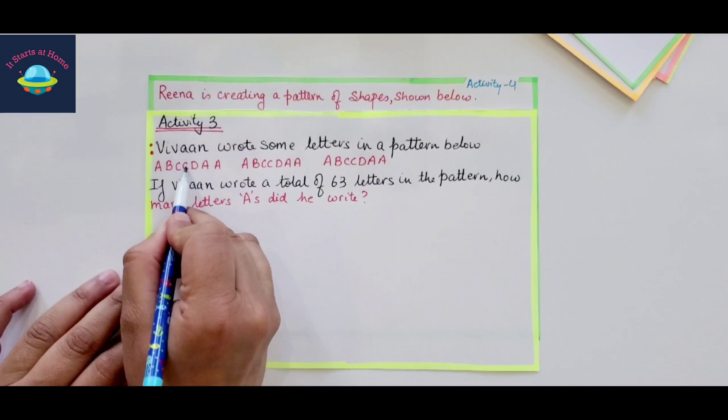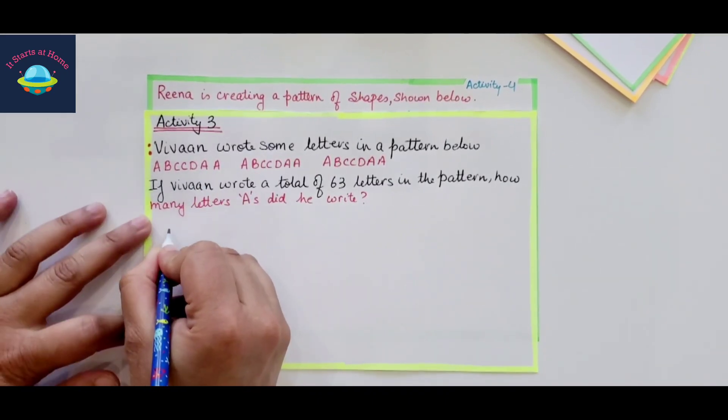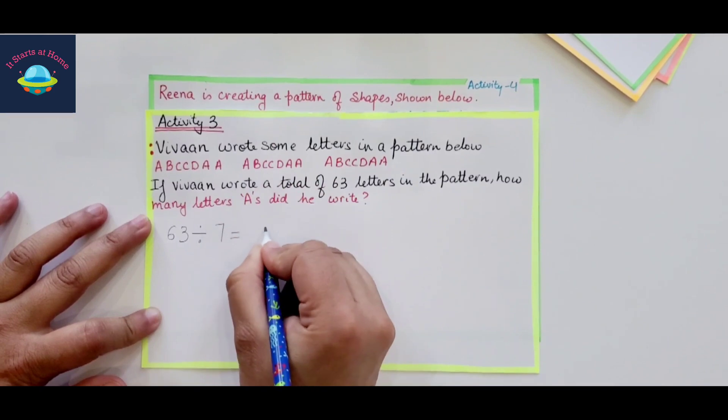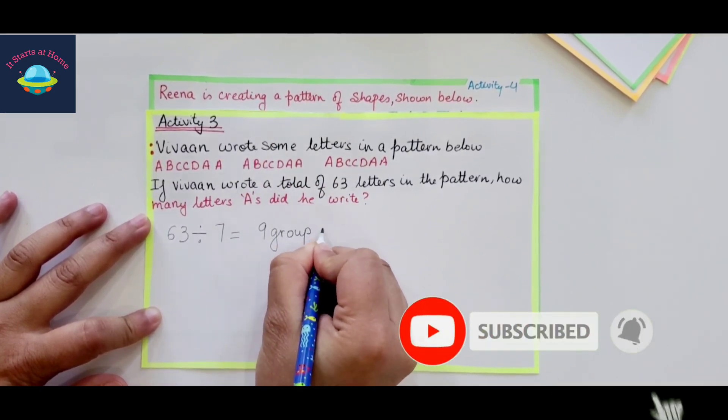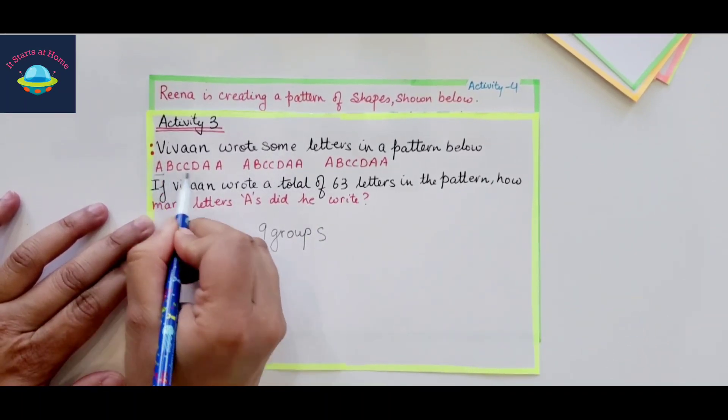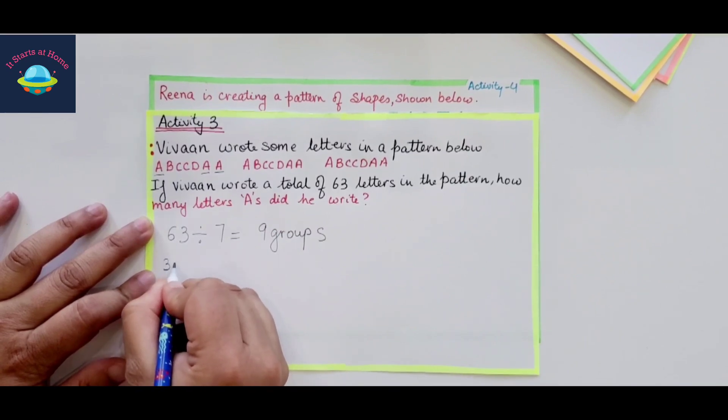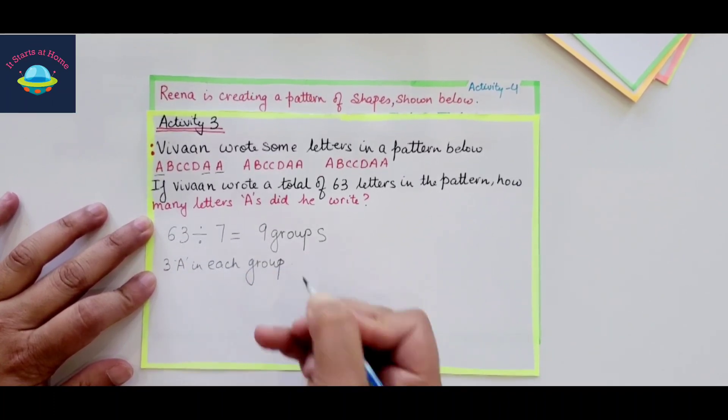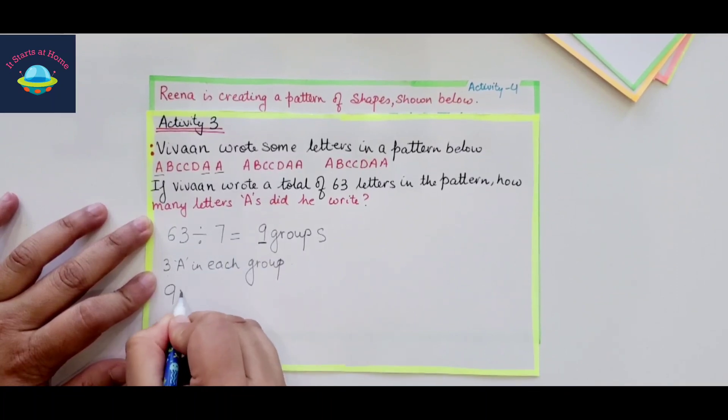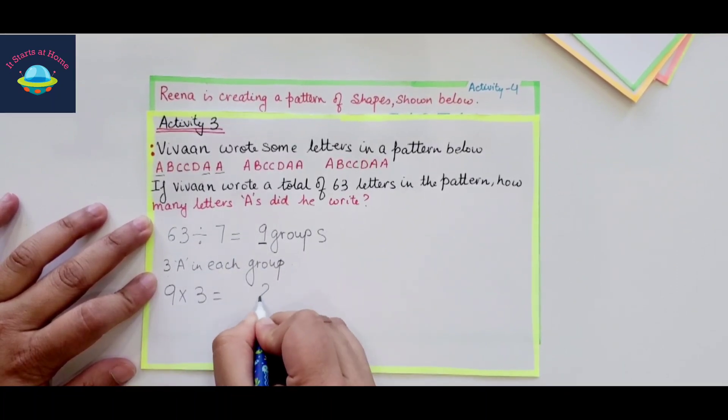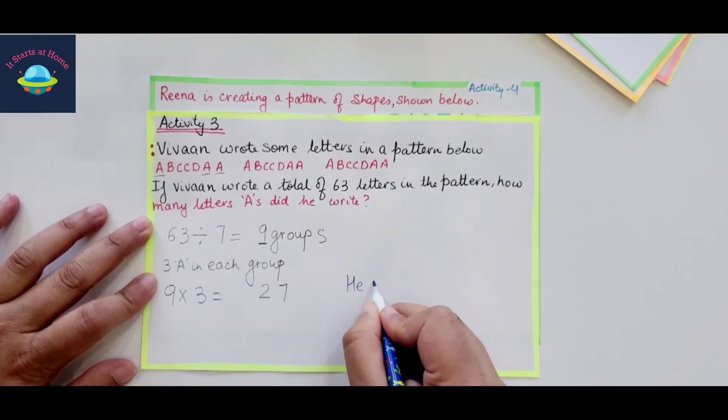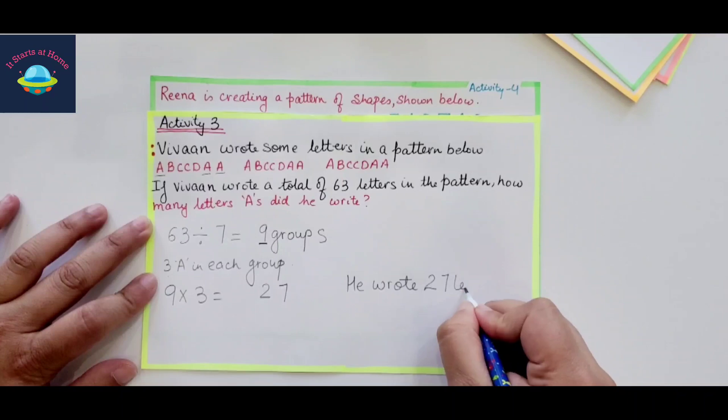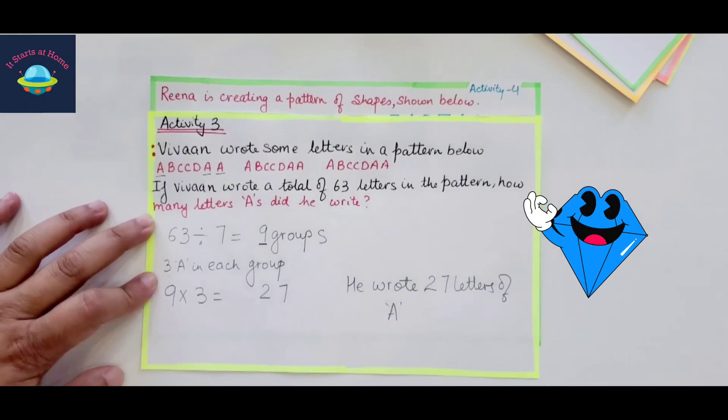How this activity will be done: Because we have 1, 2, 3, 4, 5, 6, 7, right? So we are going to do 63 divided by 7. That's going to make it into 9 groups. And then how many letters of A are there? 1, 2, 3. So that is three letters, three A's in each group. And that's going to be 9 into 3, which is 27. So he wrote 27 letters of A.